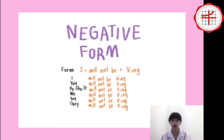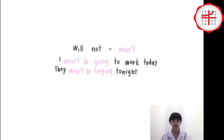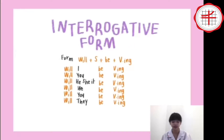Now let's move on to the negative form. Subject plus will not be plus verb-ing. For example, I will not be going to work today. They will not be singing tonight. All we have to do is put will not after the subject, and the contraction for will not is won't. I won't be going, I won't be singing.